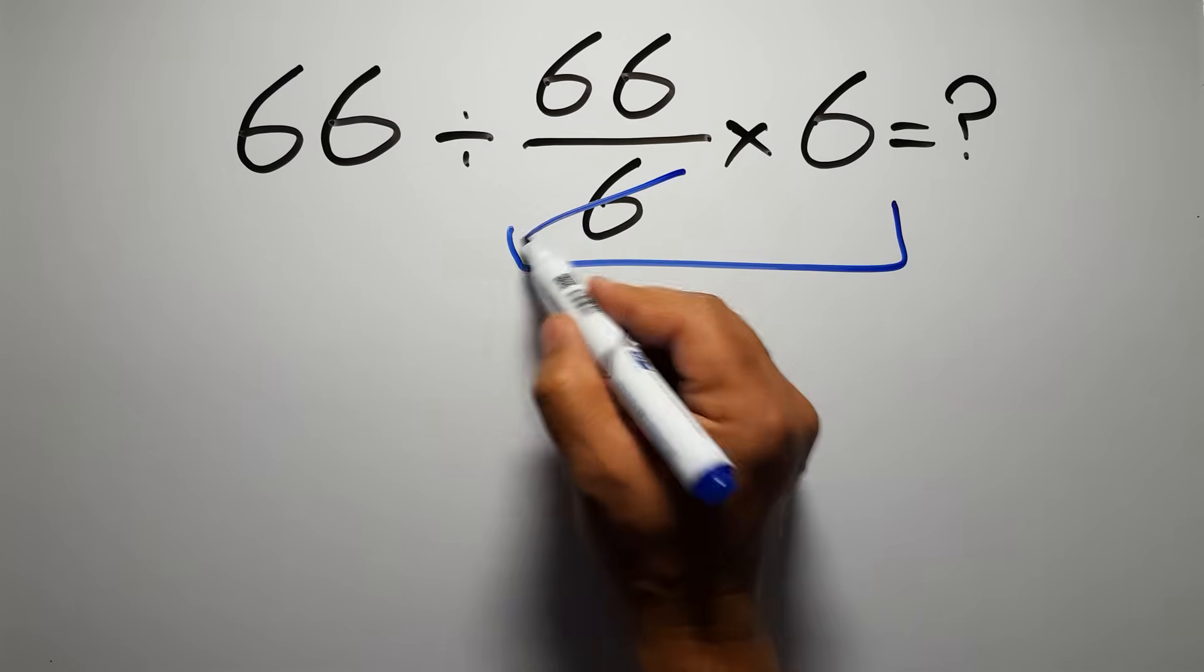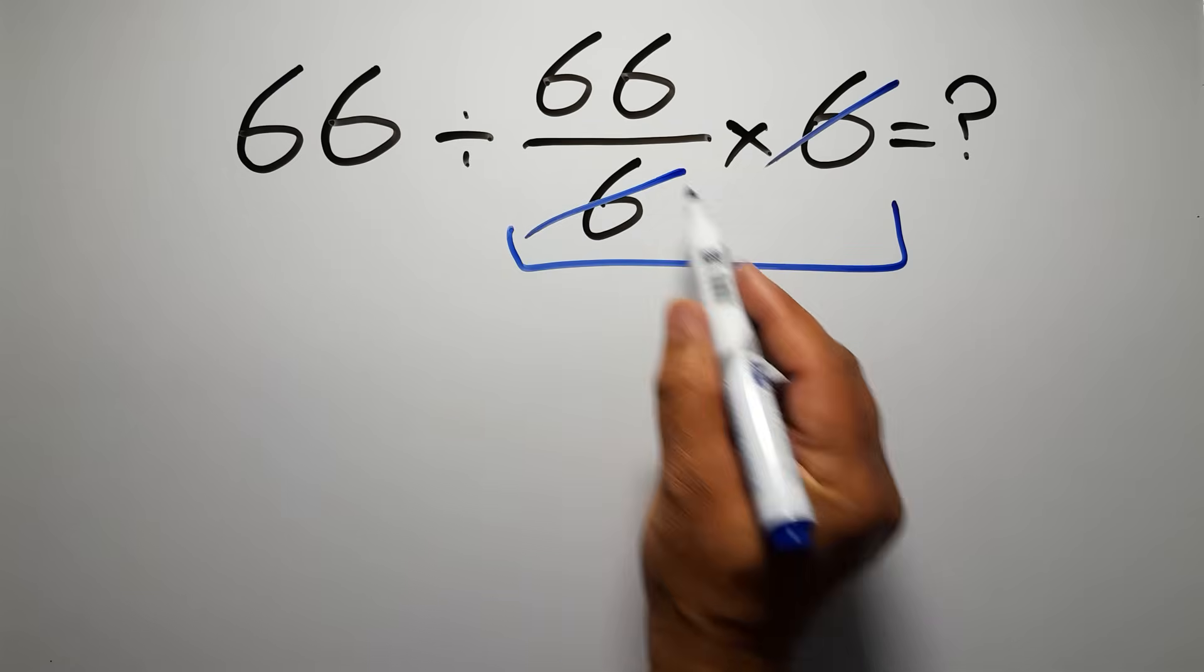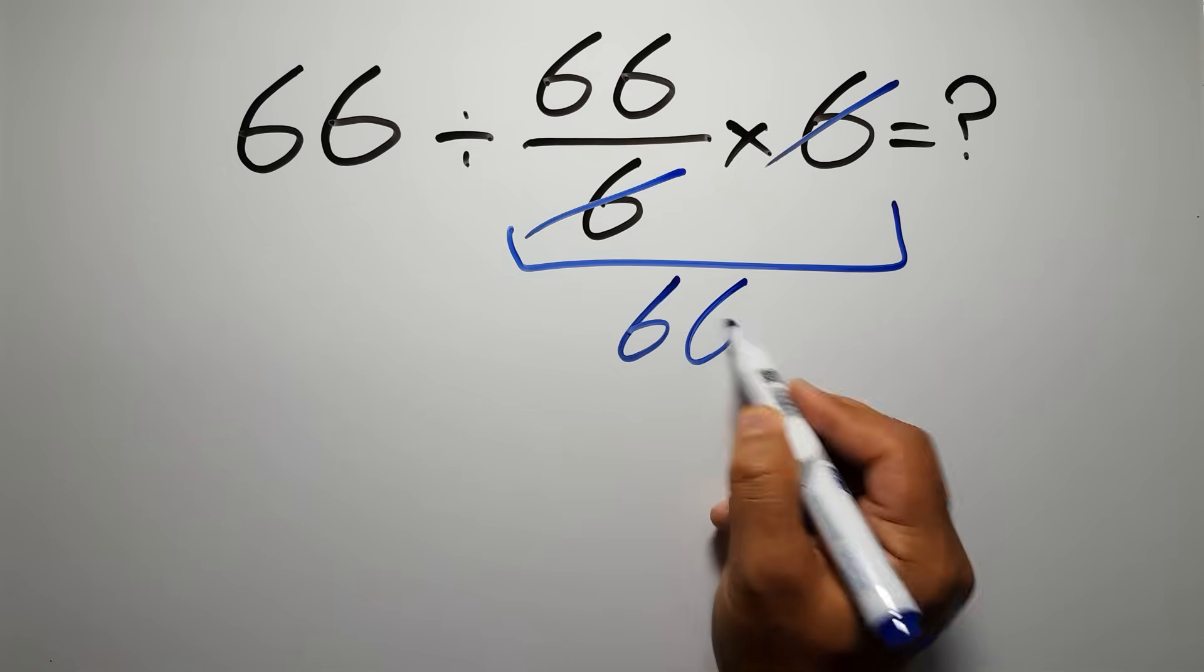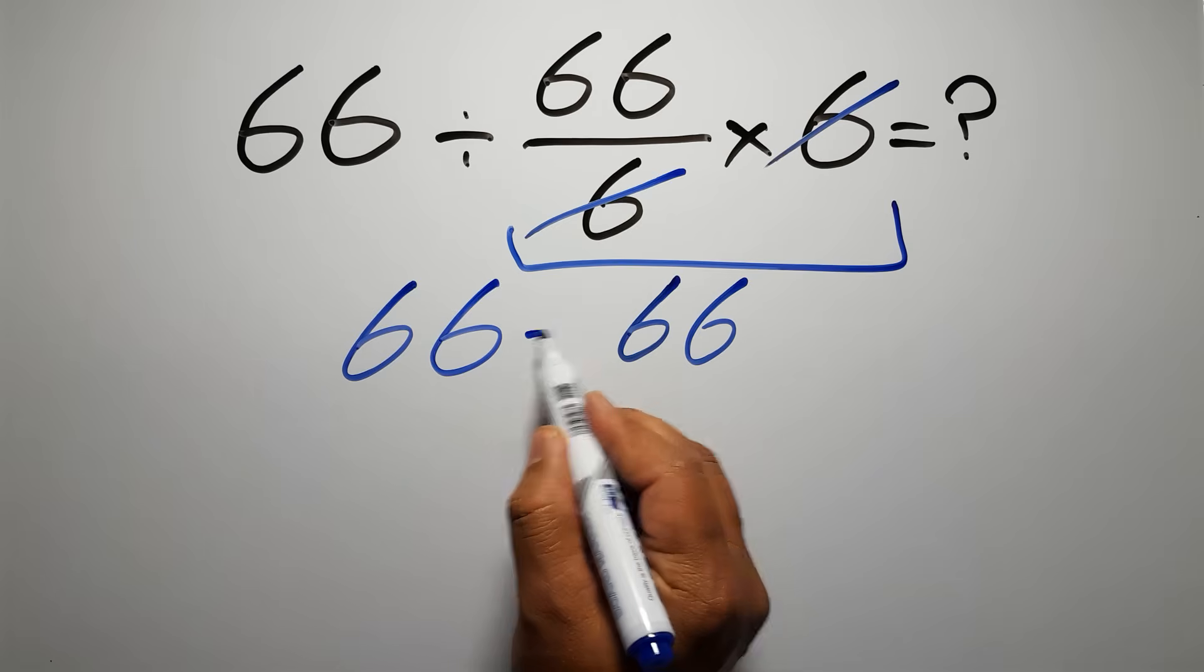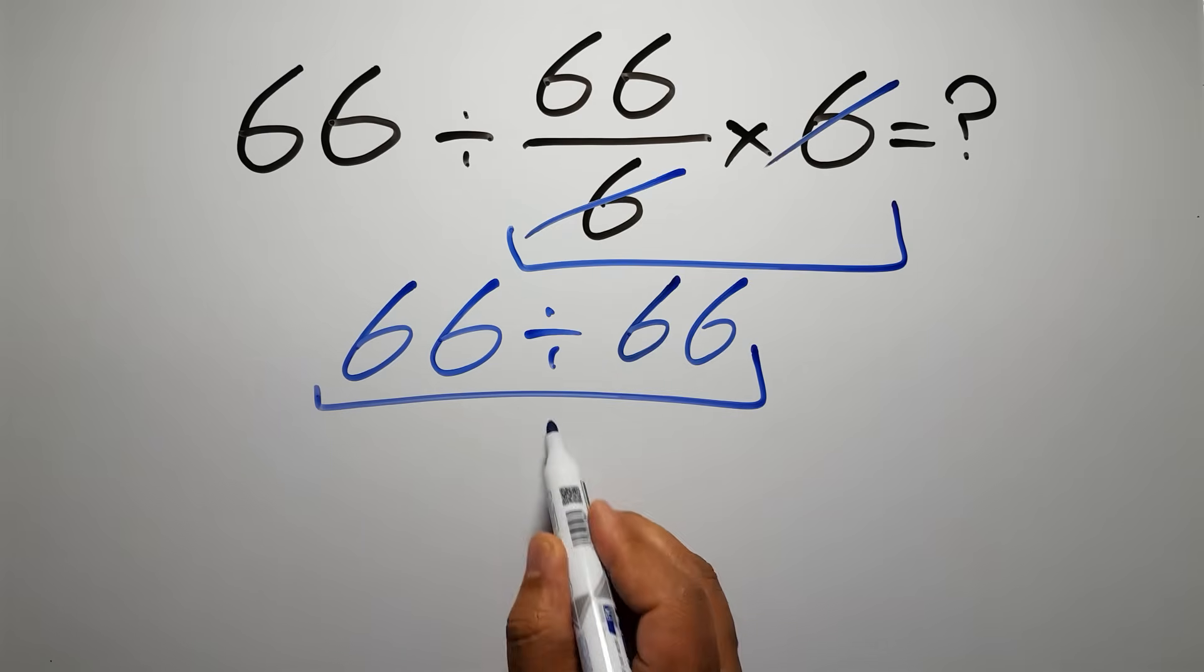We can easily cancel this 6 and this 6. So here we have just 66. And 66 divided by 66 gives us just 1.